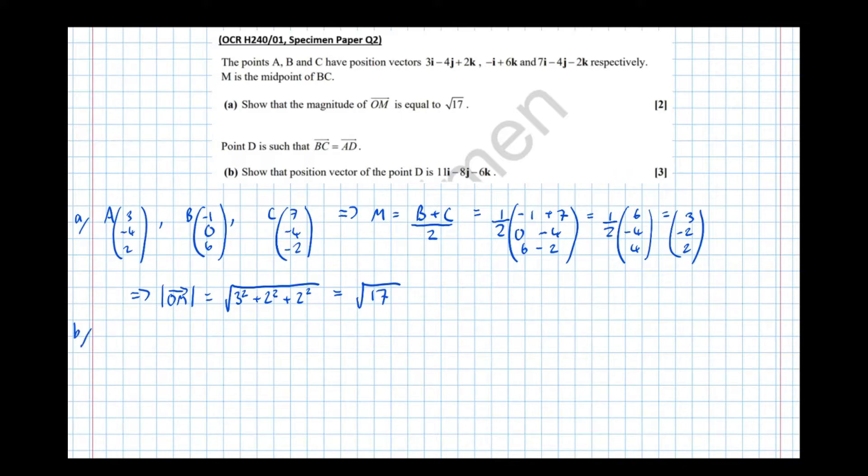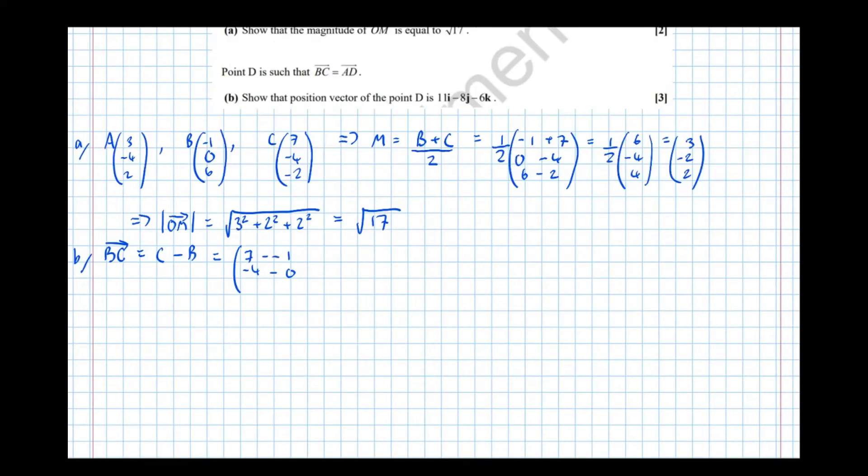So part B it says the point D is such that BC equals AD. Show that the position vector of the point D is that. Okay so let's find the vector BC. BC equals C take B equals, so C take B is 7 minus minus 1, minus 4 minus 0 and minus 2 minus 6.